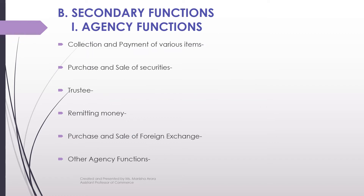The second category of functions in commercial banking is the secondary functions. The secondary functions are divided into two categories: the first one is agency functions and another one is general utility services. In agency functions, the customer acts as a principal and the bank is the agent — so there is a principal-agent relationship between the customer and the bank. On your instructions, the bank will perform certain activities, which are shown here.